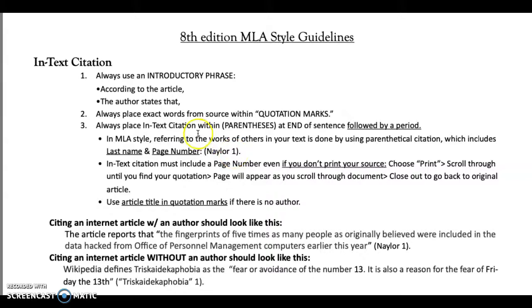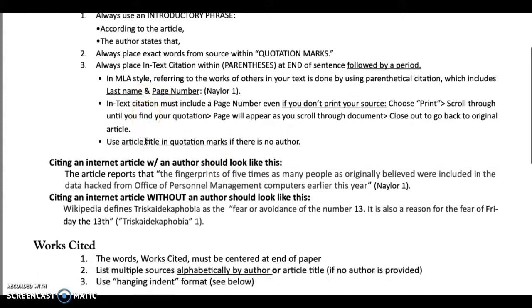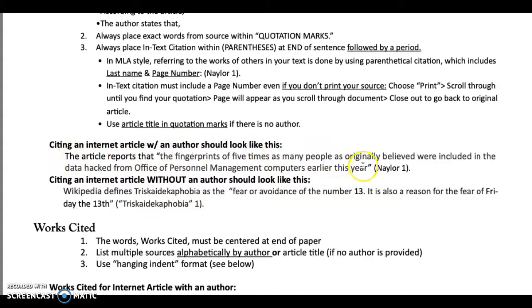Here is an example. 'The article reports that' — quotation marks — parenthesis, author last name, page. Notice the period moves to the end here; no punctuation right before the parenthesis — punctuation moves to the end. If you do not have an author, then use the article title. 'Wikipedia defines triscodecophobia as' — quotation mark, citation, quotation mark, parentheses — all these small details. I'm going to be looking at all those. Please look at what's here, use it as an example, and follow it.